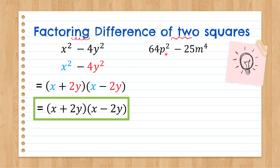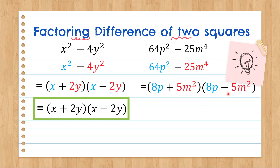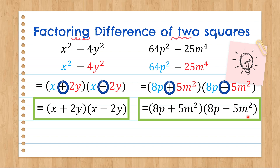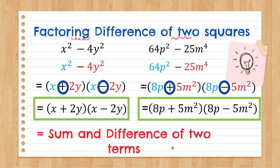Another example: 64p squared minus 25m raised to the 4th. Take the square root of 64p squared, which gives 8p times 8p. And the square root of 25m to the 4th gives 5m squared and 5m squared. Separate them and assign unlike signs. The answer will be (8p plus 5m squared) times (8p minus 5m squared). Notice their signs are always unlike. When you see a difference of two squares, its factors always have unlike signs — it becomes a sum and difference of two terms.